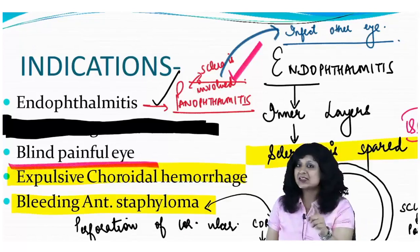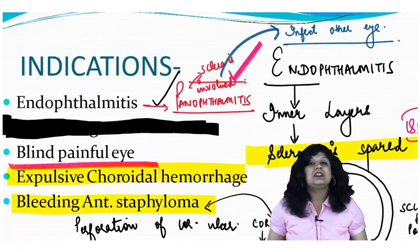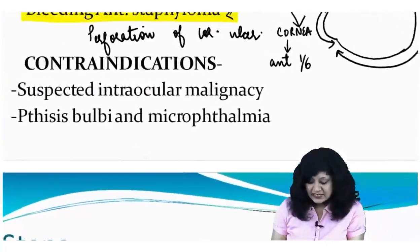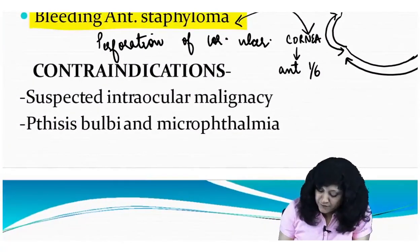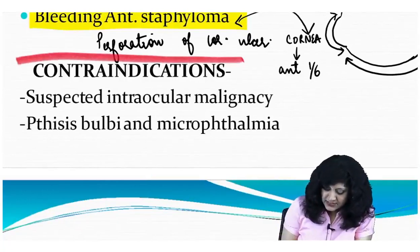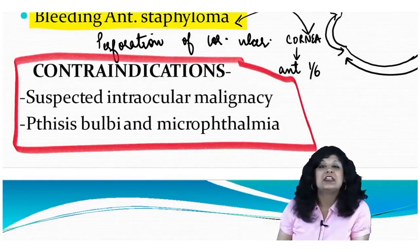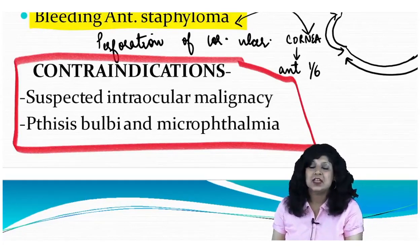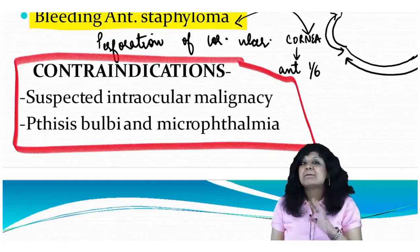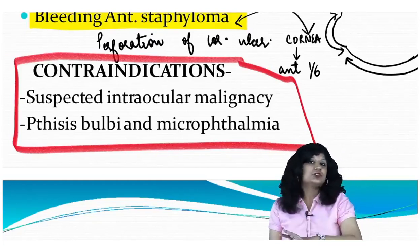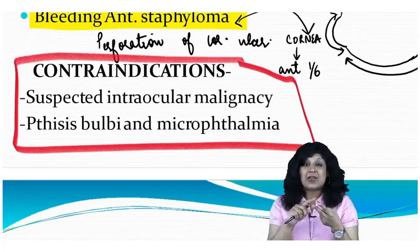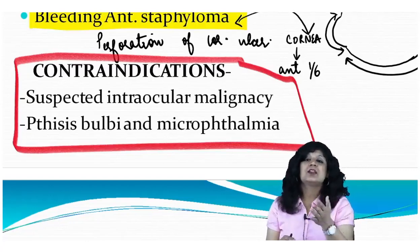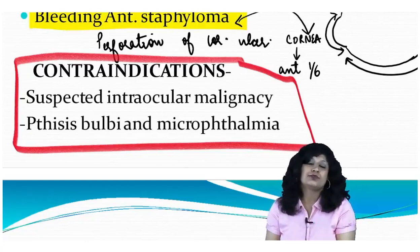The contraindications of evisceration are: any suspected intraocular malignancy — malignancy simply means enucleation, no second thoughts. Also, if there is involvement of the sclera, such as phthisis bulbi or microphthalmia, you have to take out the entire eyeball.